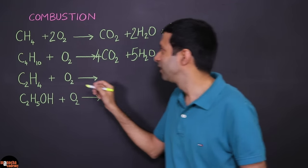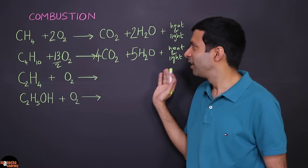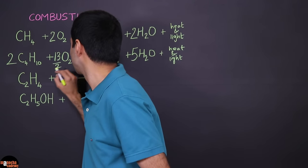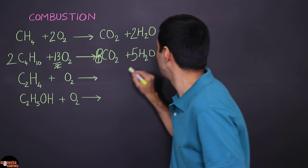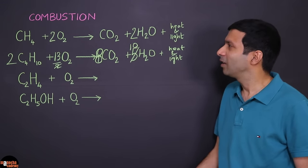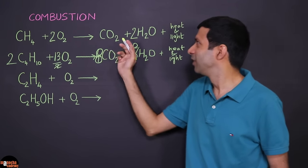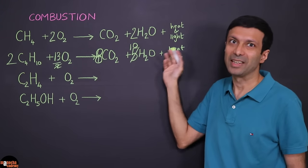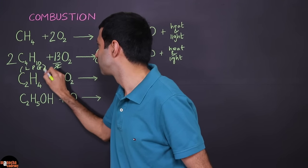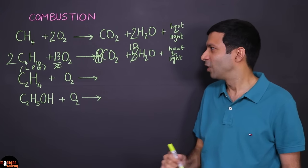Here's a simple trick to balance the equation when you get an odd number of oxygen. Use fractions: 13/2 on the oxygen side, then multiply the whole equation by two to clear the fraction. So we get 2C₄H₁₀ + 13O₂ → 8CO₂ + 10H₂O. Methane is present in CNG — compressed natural gas — used as a fuel. Butane is used in LPG cylinders, also a clean fuel producing only carbon dioxide, water vapor, and energy.